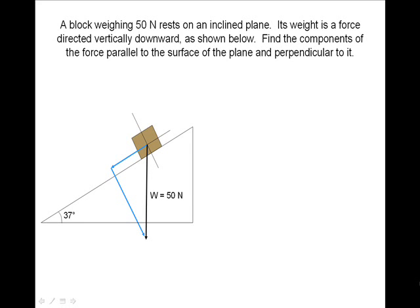We must find the angle to solve for the components. This is the angle we will use for our vector triangle. A right triangle has been drawn in yellow.